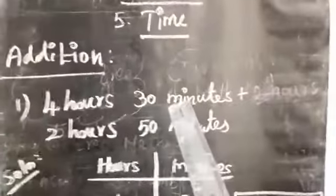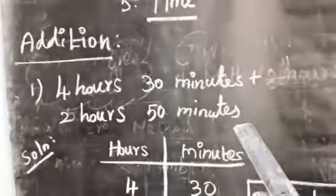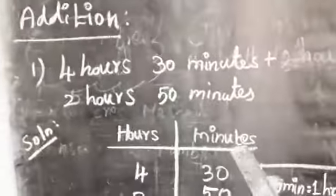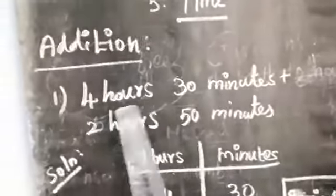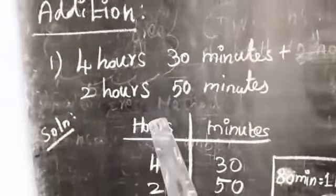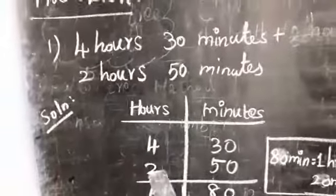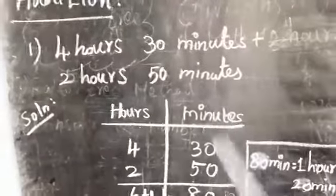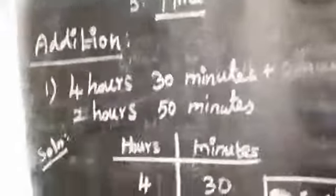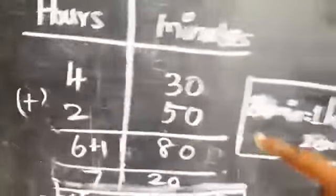First sum: 4 hours 30 minutes plus 2 hours 50 minutes. Write the solution with hours and minutes columns. Write 4 hours 30 minutes on the first line, then 2 hours 50 minutes below it. Now we can add because this is an addition problem — add the hours and minutes separately.